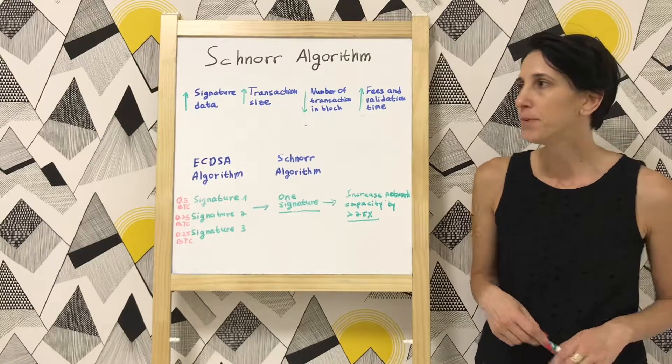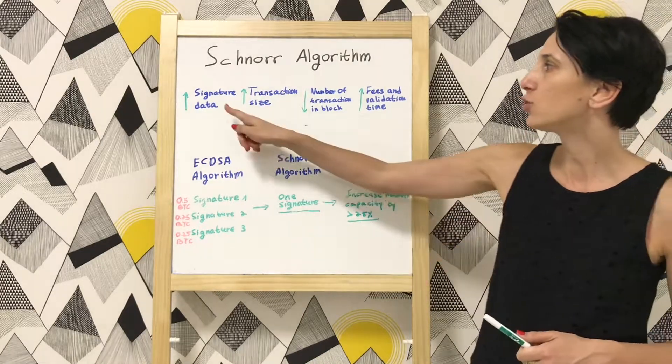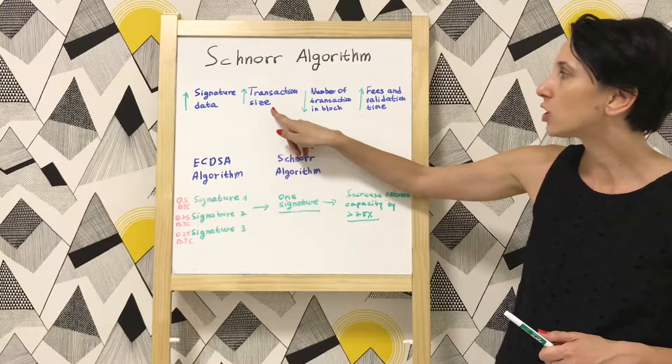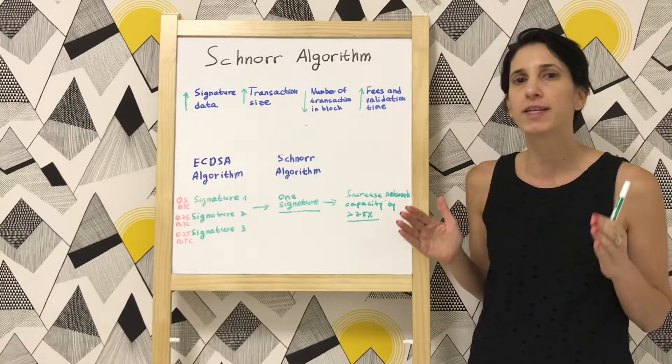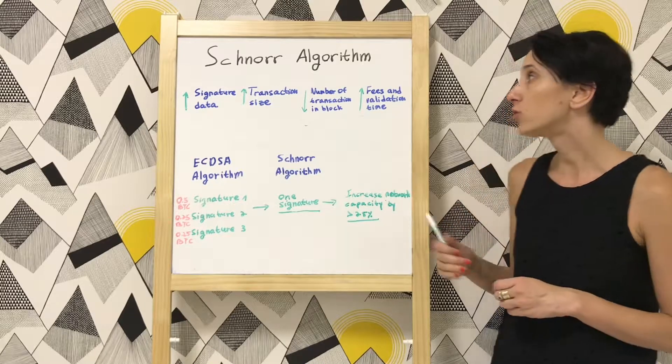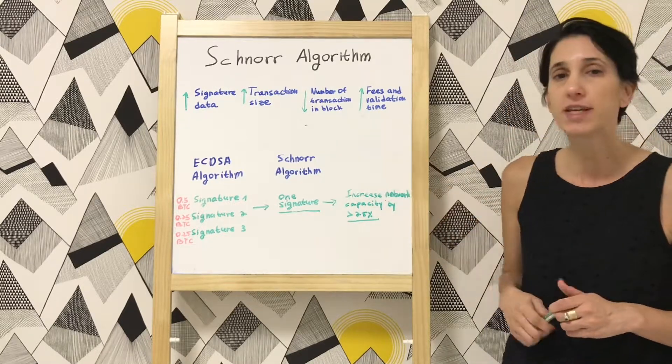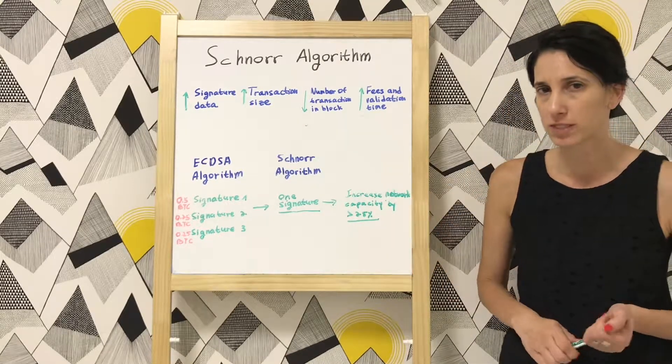Now the bigger the size of the signature data, the bigger the size of the transaction which reduce the number of transactions that can be included in the block which as a result increase the fees and the validation time of the transaction.